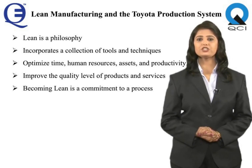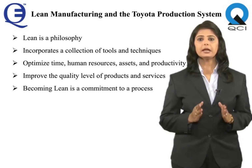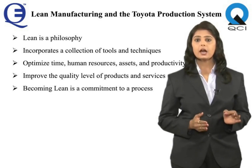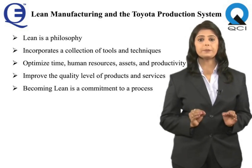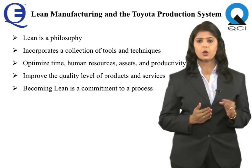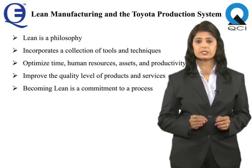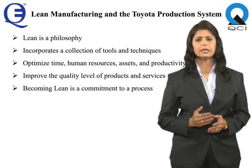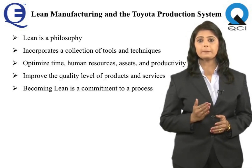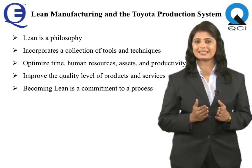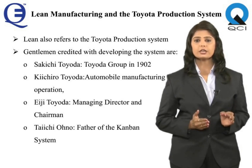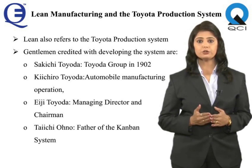Lean Manufacturing and the Toyota Production System. The use of the term lean in a business or manufacturing environment describes a philosophy that incorporates a collection of tools and techniques into business processes to optimize time, human resources, assets, and productivity, while improving the quality level of products and services. Becoming lean is a commitment to a process and a tremendous learning experience. The term lean also refers to the Toyota Production System established by the Toyota Corporation.